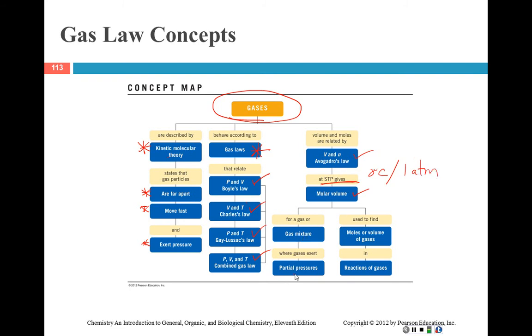The volume and moles are related by Avogadro's law and by molar volume at STP, which you remember is zero degrees C and one atmosphere. A gas mixture, we're going to use partial pressure laws. Moles or volumes of pure gases, we're going to use molar volume to calculate those. It's just kind of an overview. I just thought I'd throw that in at the end. I believe we have finally finished the gas laws chapter, so congratulations if you stayed with me. I will see you on the boards.